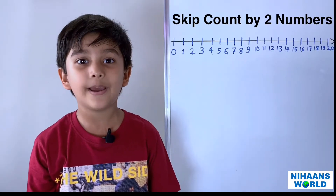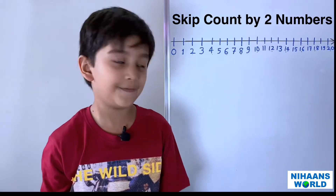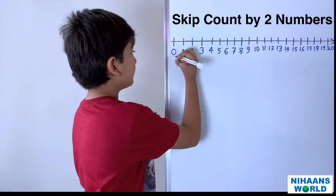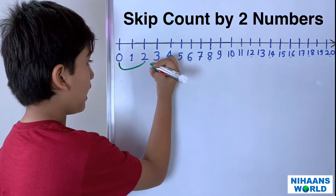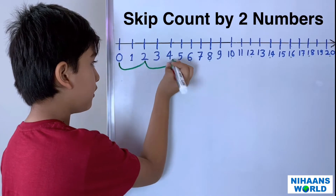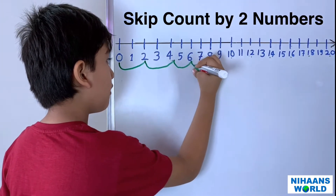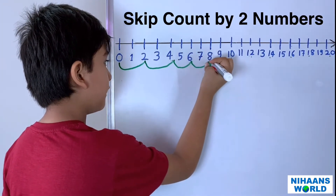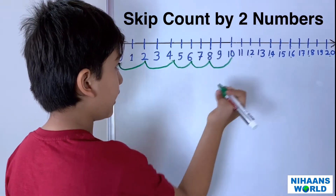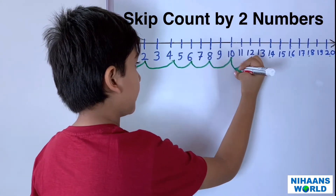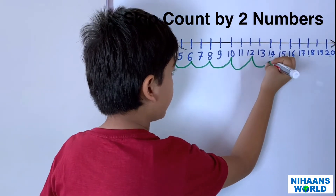Let's see an example. Skip counting by two: we get zero to two, two to four, four to six, six to eight, eight to ten, ten to twelve, twelve to fourteen.